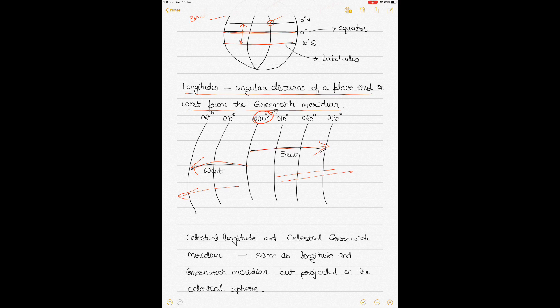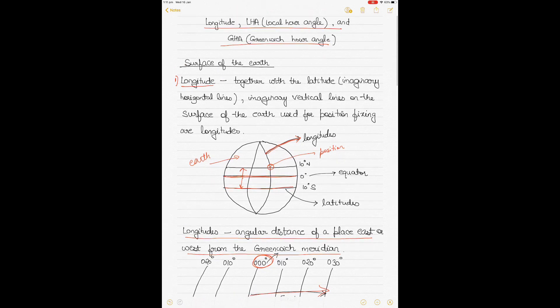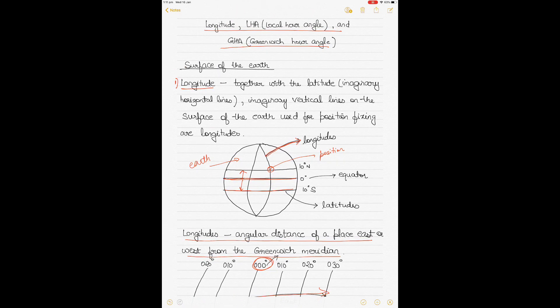The reason I explain the Greenwich Meridian is because when we talk about the relationship between longitude, GHA, and LHA — the topic of this video — we are talking from a celestial sphere perspective. What we do is project the longitude onto the celestial sphere and call it celestial longitude, and when we project the Greenwich Meridian onto the celestial sphere, it's called the celestial Greenwich Meridian.